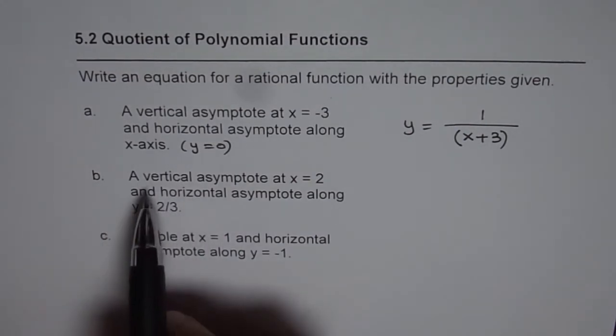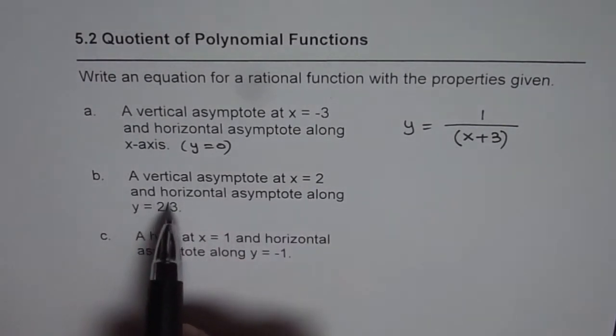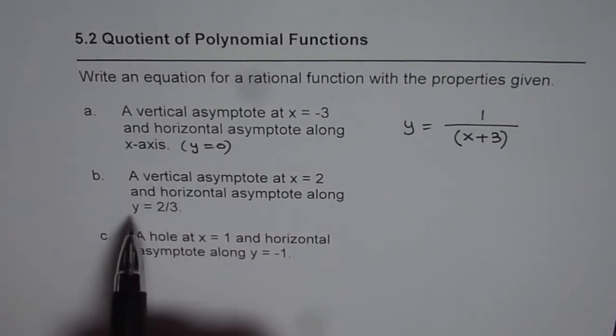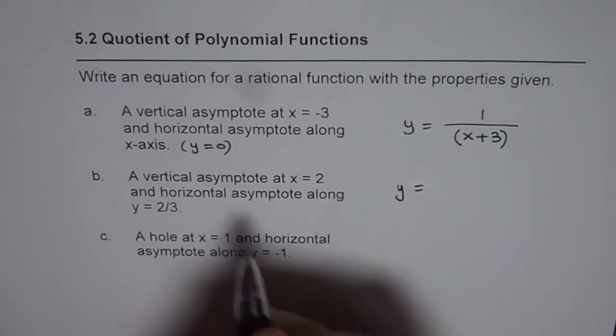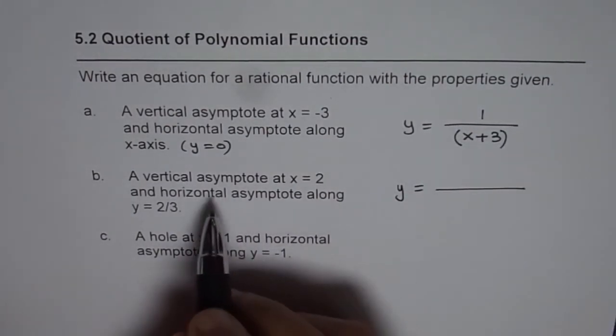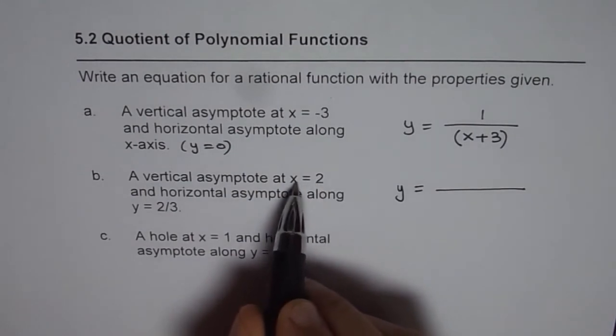Second one is vertical asymptote at x equals 2 and horizontal asymptote along y equals 2 over 3. So in this case, first thing, vertical asymptote at x equals 2.